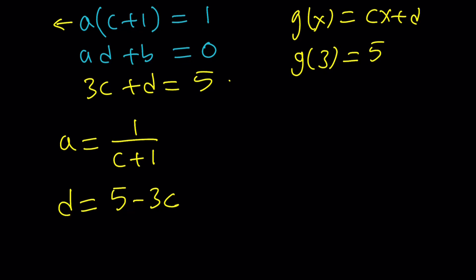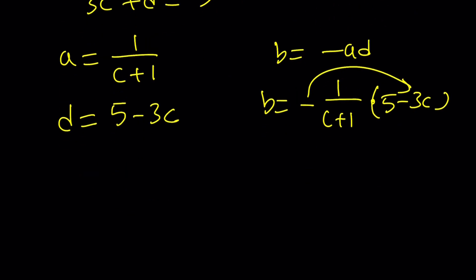And then using these two things, look at the second equation. b can be written as -ad. And since a and d are both in terms of c, we can replace a and d with those. So b is going to be -1/(c + 1) multiplied by d, which is 5 - 3c. Let's act on this with the negative sign. So b can be written as (3c - 5)/(c + 1).